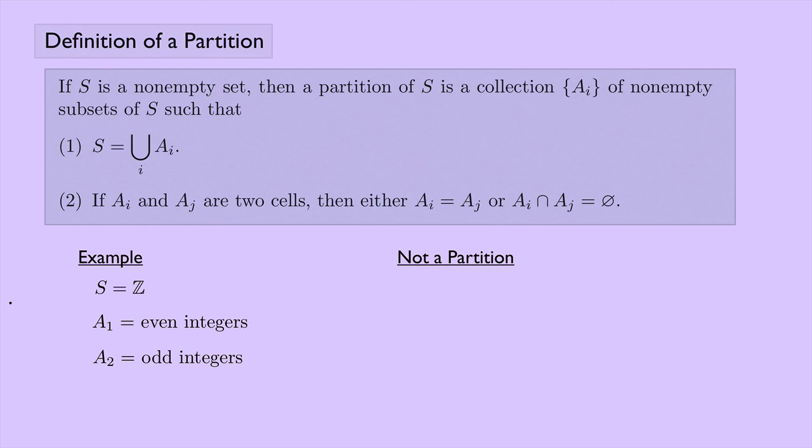Here's something that's not a partition. Suppose we take the set S, which is the set of integers, and A1 is the set of positive integers. A2 is the set of negative integers. Well, now we have a problem. What's missing? Zero. Zero is neither positive nor negative. So in this case: